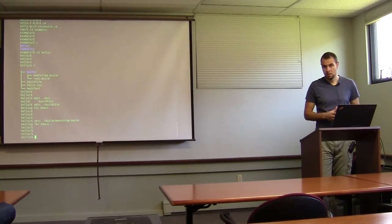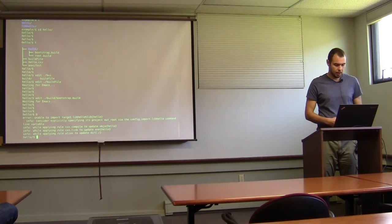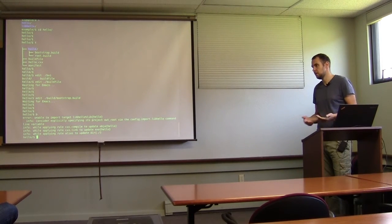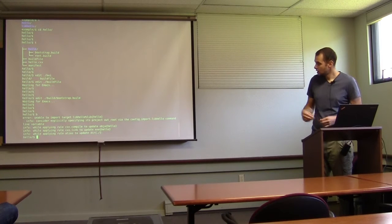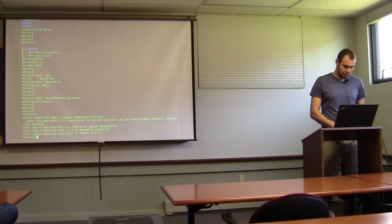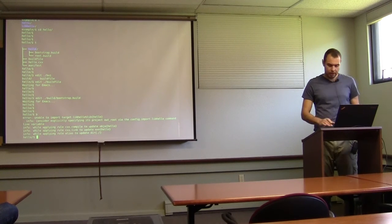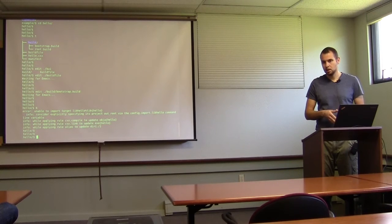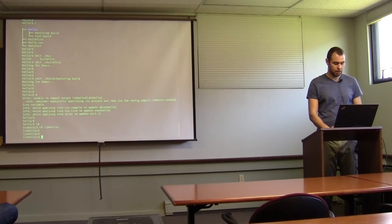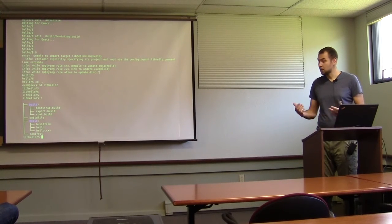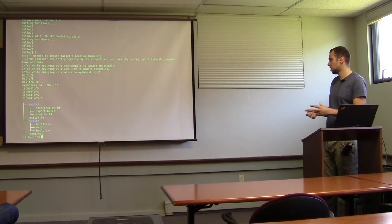It says it needs libhello but we didn't specify where it is. Let's go build libhello first. This is the libhello project — pretty similar but a bit more complicated, with sources in a subdirectory. The build file builds a library instead of an executable, has a couple of variable assignments, and configures where to install things. It's not a black box and not five pages of makefile — that's what an old build system would require to build a simple cross-platform library.